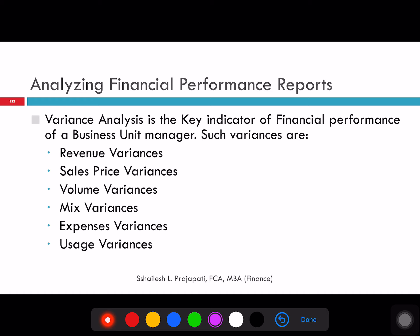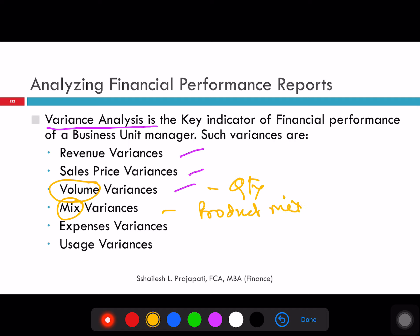Analyzing the financial performance report is based on various analyses when we compare on a yearly, half-yearly, or quarterly basis. The major variances are: revenue variances (sales difference), sales price variances (what price you planned vs. what price you dispatched), volume variances (production quantity), mix variances (product mix — how much ballpen, sketch pen, or refills you have sold), expenses variances, and usage/consumption variances. For example, if you planned an input of 10 against an output of 1, but you are doing an input of 12 against an output of 1, there is a variance of 2.